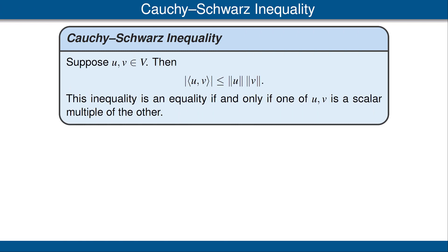Now we come to what may be the most important inequality in mathematics: the Cauchy-Schwarz inequality. It states that the absolute value of the inner product of two vectors is less than or equal to the norm of the first vector times the norm of the second vector. Furthermore, this inequality is an equality if and only if one of the vectors is a scalar multiple of the other. By choosing different inner products, the Cauchy-Schwarz inequality becomes different useful inequalities.